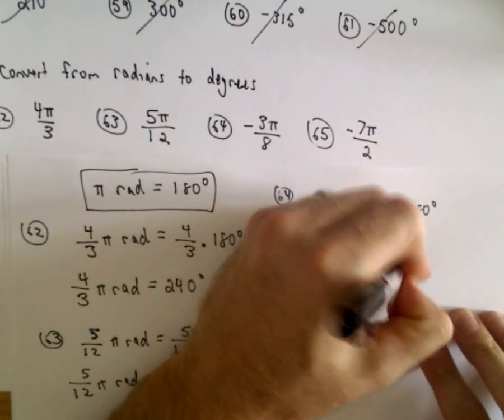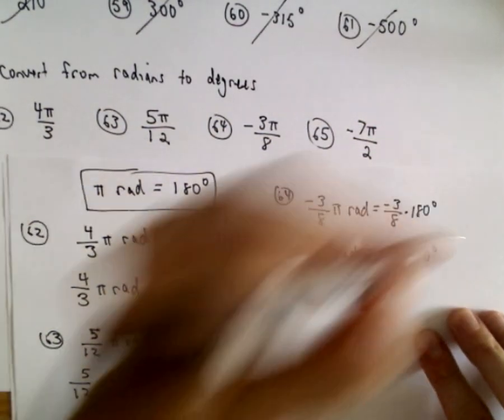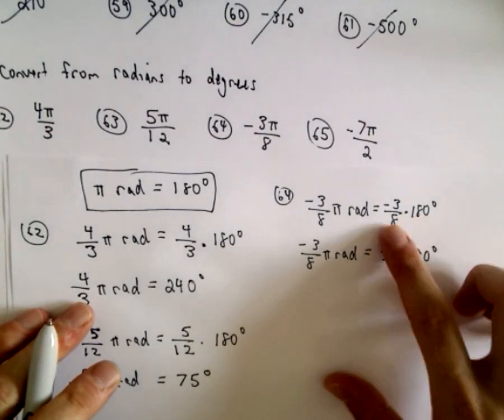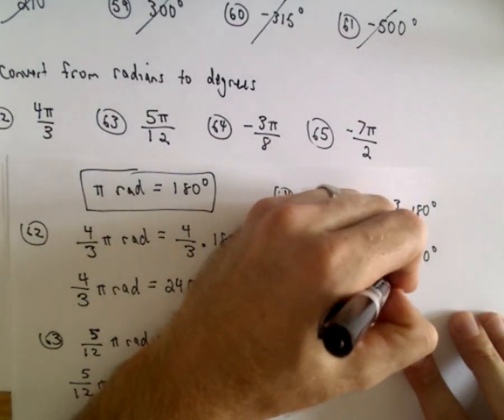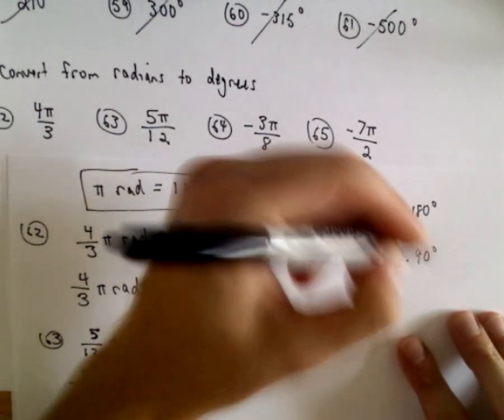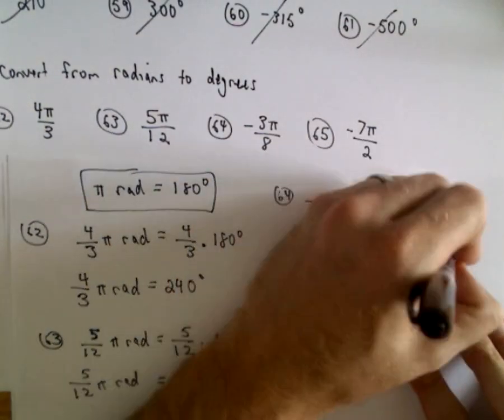So that would be negative 3 over 4 times 90 degrees. I'm just dividing 180 by 2 and 8 by 2. We can divide by 2 again. So 4 divided by 2 will be 2, 90 divided by 2 will be 45.